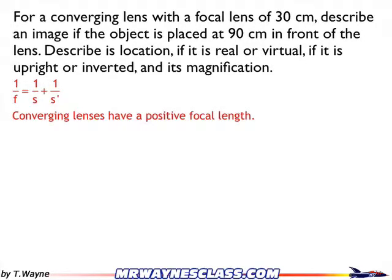Converging lenses have a positive focal length, and that's an important clue. It says I have a converging lens, which means my focal length, when I put it into the formula, is going to be a positive number. If it was a diverging lens, it would be a negative number instead, so that's an important clue.